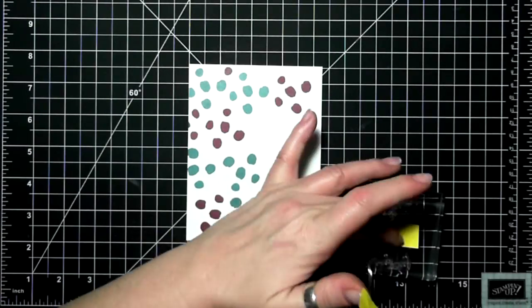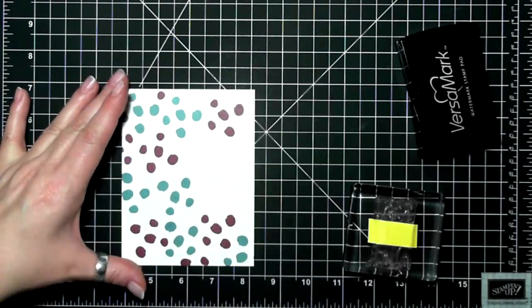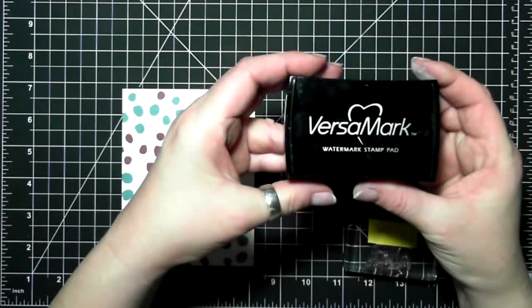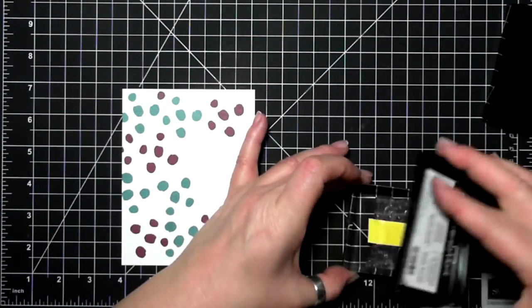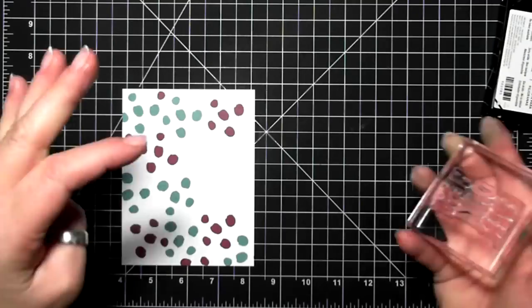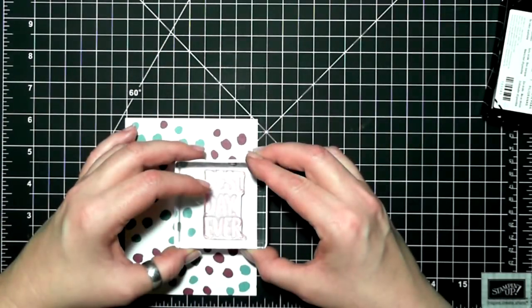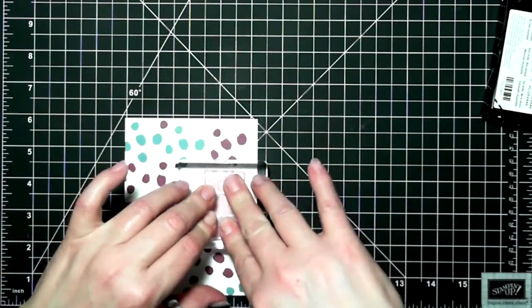So I'm masking off the day part in the sentiment best day ever, masking that middle part off. Then I'm going to be stamping and using my black embossing powder, and then I will restamp with the friend from simply wonderful.